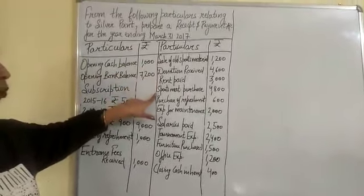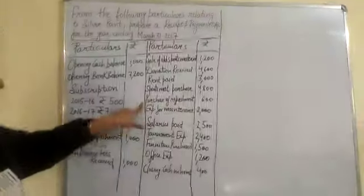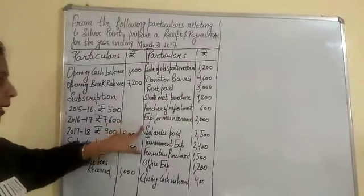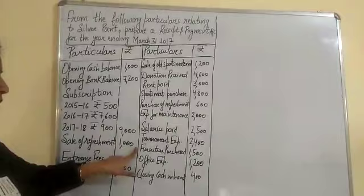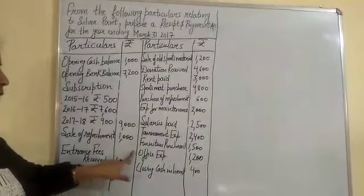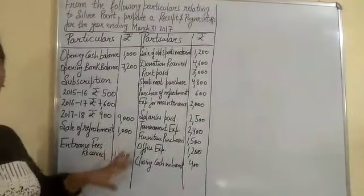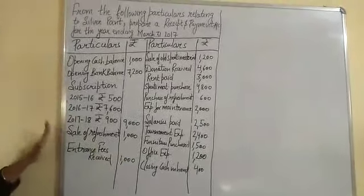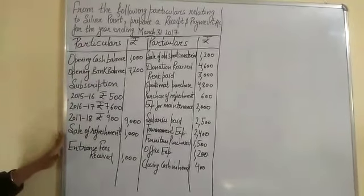We are also given rent paid, sports material purchased, purchases of refreshment, expenses for maintenance, salaries paid, tournament expenses, furniture purchased, office expenses, and closing cash in hand. With the help of this question, we will prepare a receipt and payment account.